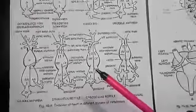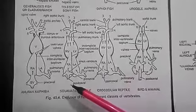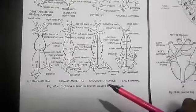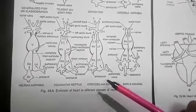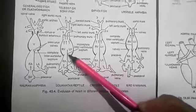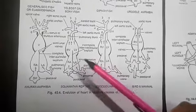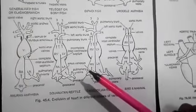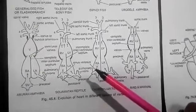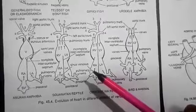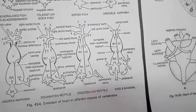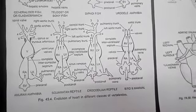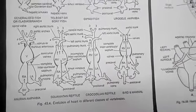In many forms sinus venosus is incorporated into the wall of the right atrium. The ventricle is also partly divided by a septum in most reptiles and in alligators and crocodiles, it is nearly complete forming two ventricular chambers.